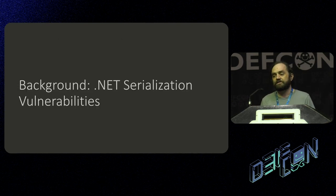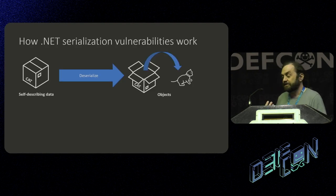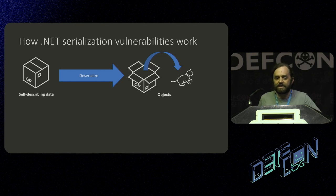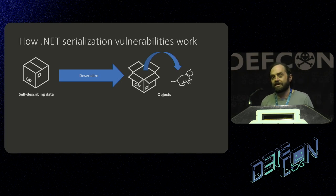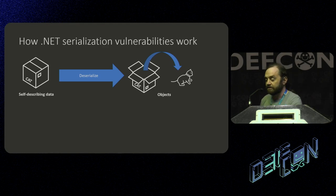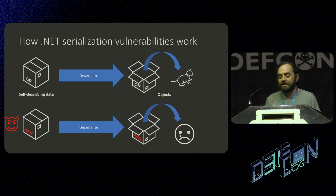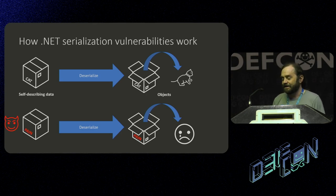.NET serialization vulnerabilities generally happen because you have a polymorphic serializer — a serializer where the data tells you what type it wants to be. If you have a box labeled 'cat,' your serializer makes a cat object and sets properties from the contents. But someone malicious can give you a box labeled 'pain,' your serializer says 'I guess I'm making some pain then,' and you're having a bad time.